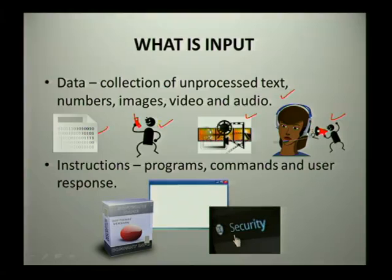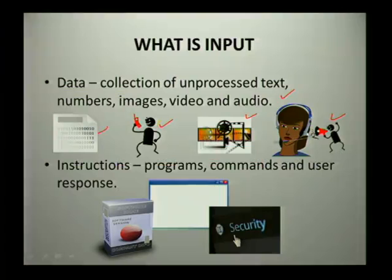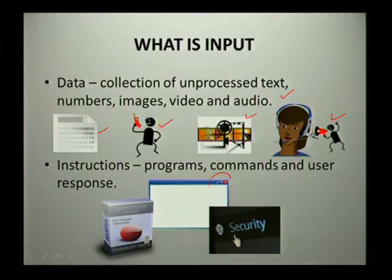Now we have instructions. In order for you to use your input device, some programs need to be in your computer. We normally call them instructions, and there's different software that comes with your input. Instructions include programs, commands, and user responses. These instructions tell your computer what to do, how to perform, and how to control the hardware. Your commands or user responses are when you respond to a specific command from your computer to perform a specific action, using your input device to give instructions or commands.